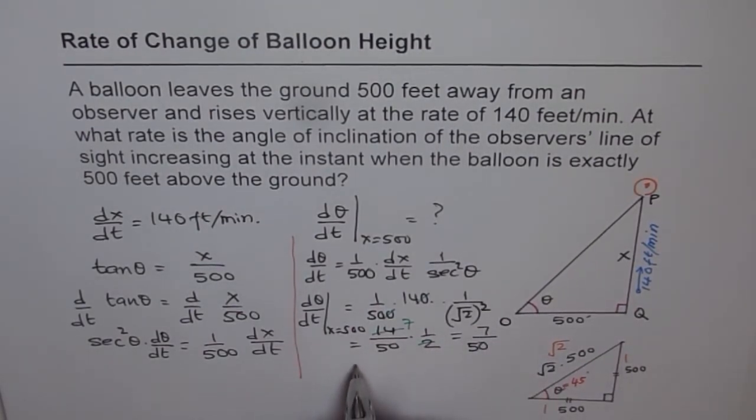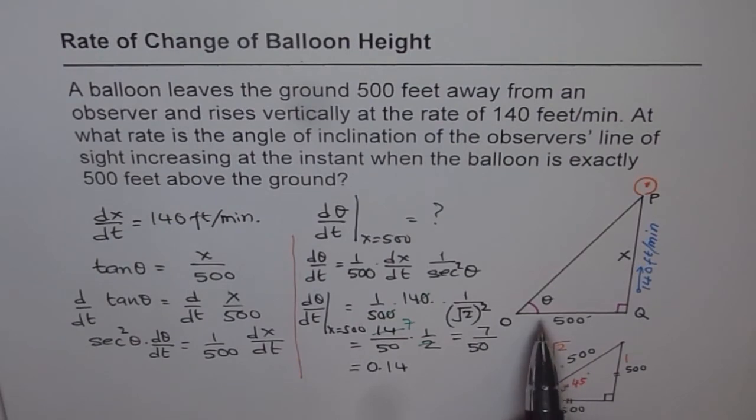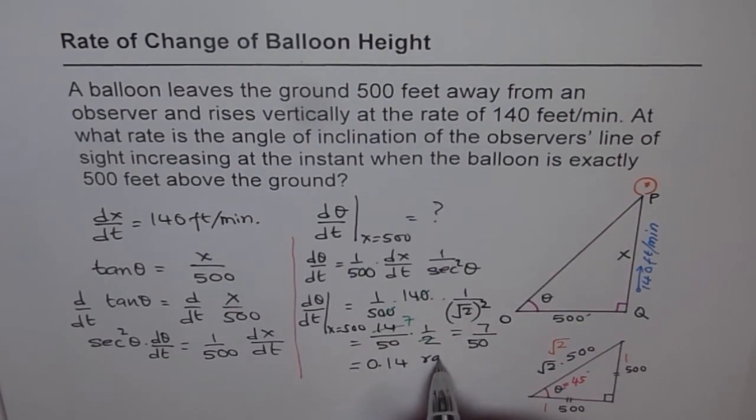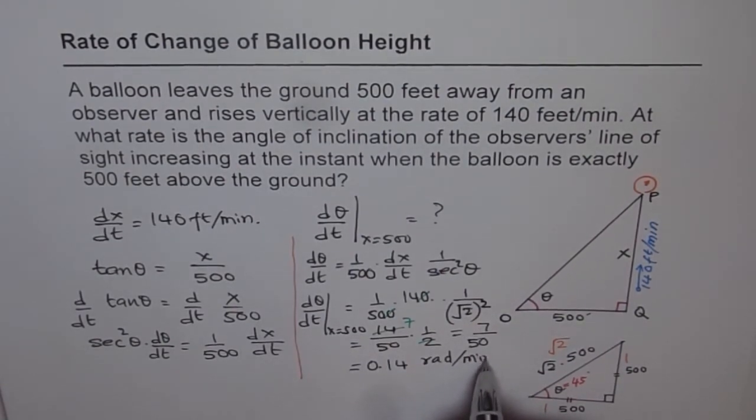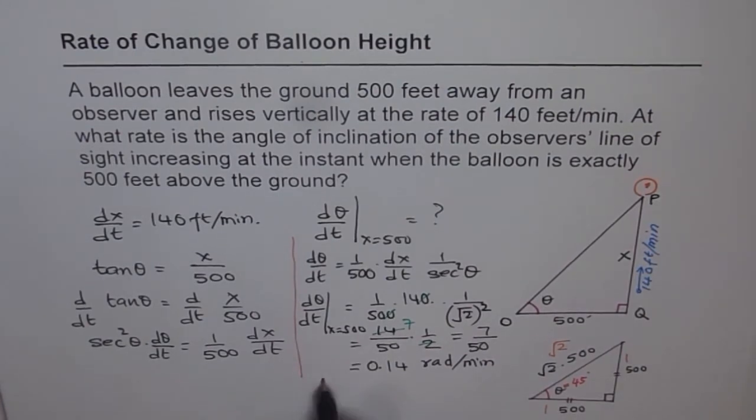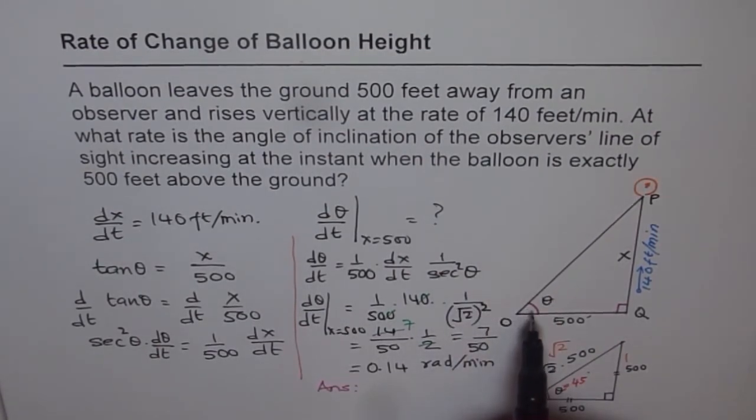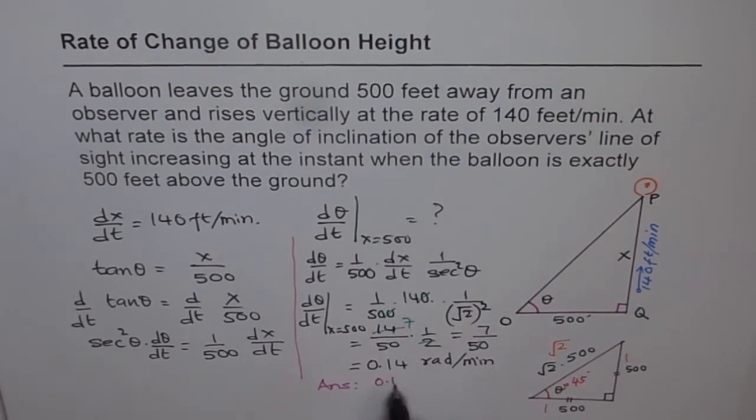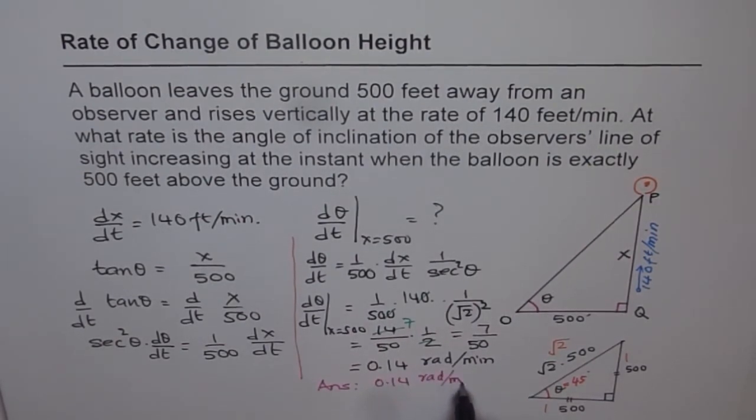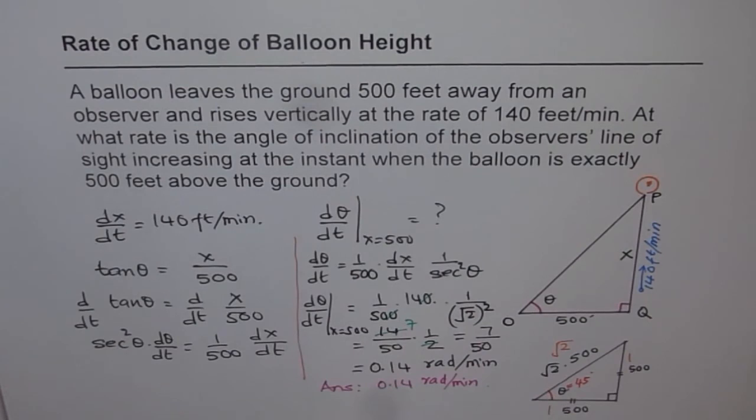So 7 over 50 is actually equal to 0.14. 0.14. Remember, angles when we are talking about in trigonometry are in radians. So that is radians per minute. So that is our answer. We can clearly write down the answer. The rate of change of the angle of sight is equal to 0.14 radians per minute when the height of the balloon is 500 feet. You should write the complete sentence. And that's how we should be doing questions like this.